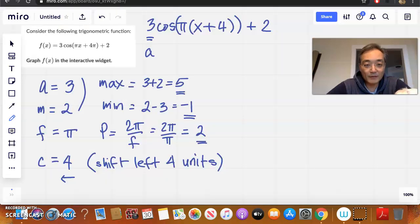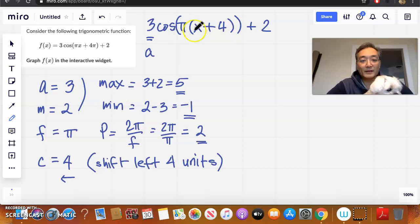So again, just kind of reviewing. We were given the function and we were asked to graph it using the interactive widget. So we first found the amplitude, the midline, the frequency, and the shift, right? We call the shift C. We found the max by adding the amplitude and the midline. We found the min by subtracting the amplitude from the midline. We found the period, again, 2π over the frequency is 2. We know this is a shift 4 units to the left because it's plus 4.